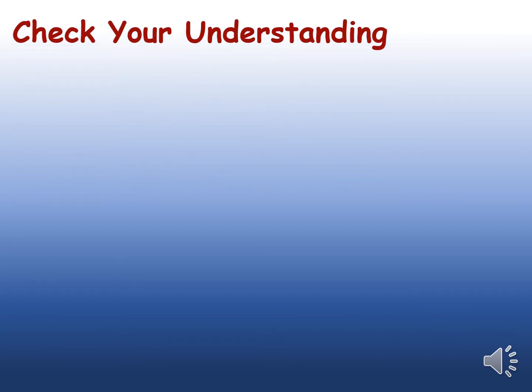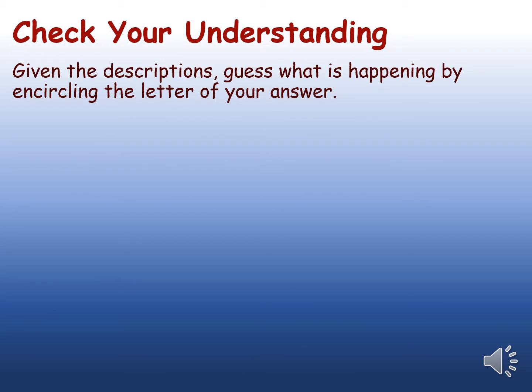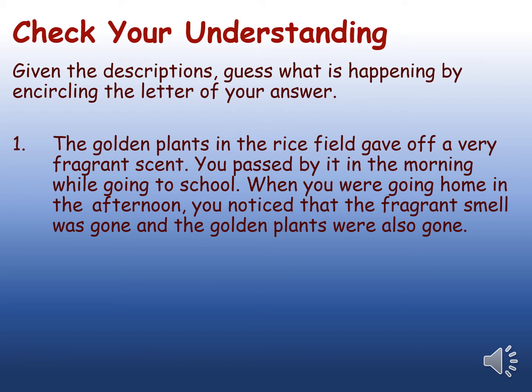Let us check your understanding. Given the descriptions, guess what is happening by encircling the letter of your answer in your handouts. Number 1: The golden plants in the rice field gave off a very fragrant scent. You passed by it in the morning while going to school. When you were going home in the afternoon, you noticed that the fragrant smell was gone and the golden plants were also gone. What do you think happened?